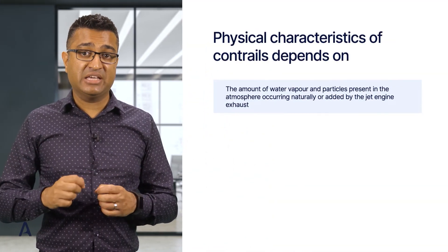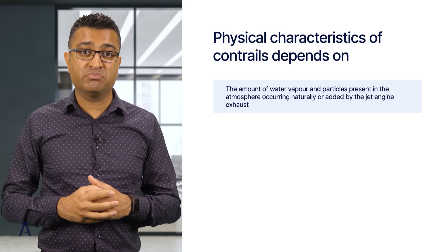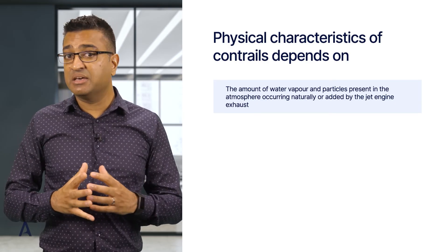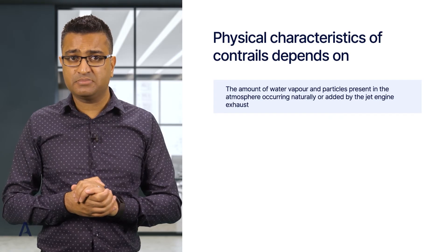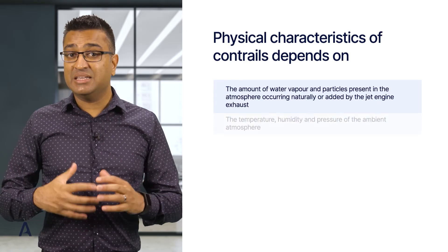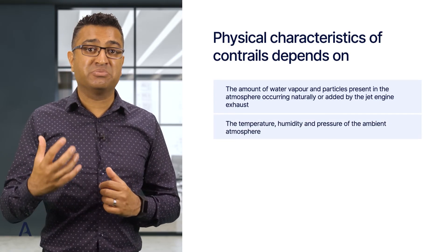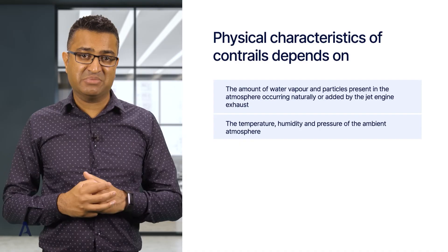Net radiative forcing is strongly influenced by the physical characteristics of contrails. These characteristics depend on the following variables: the amount of water vapour and particles present in the atmosphere, occurring naturally or added by the jet engine exhaust; and the temperature, humidity, and pressure of the ambient atmosphere.